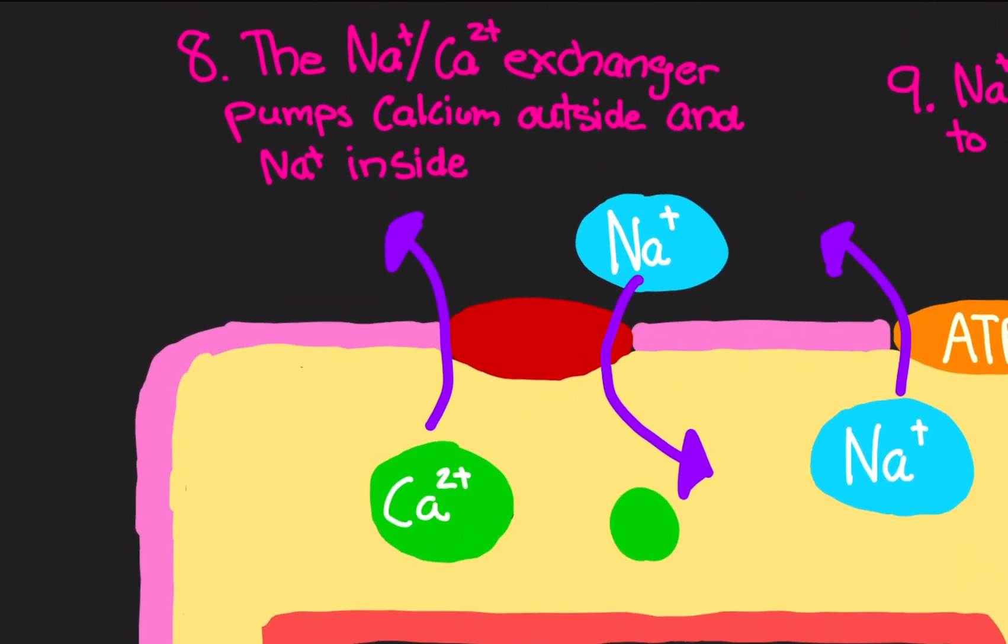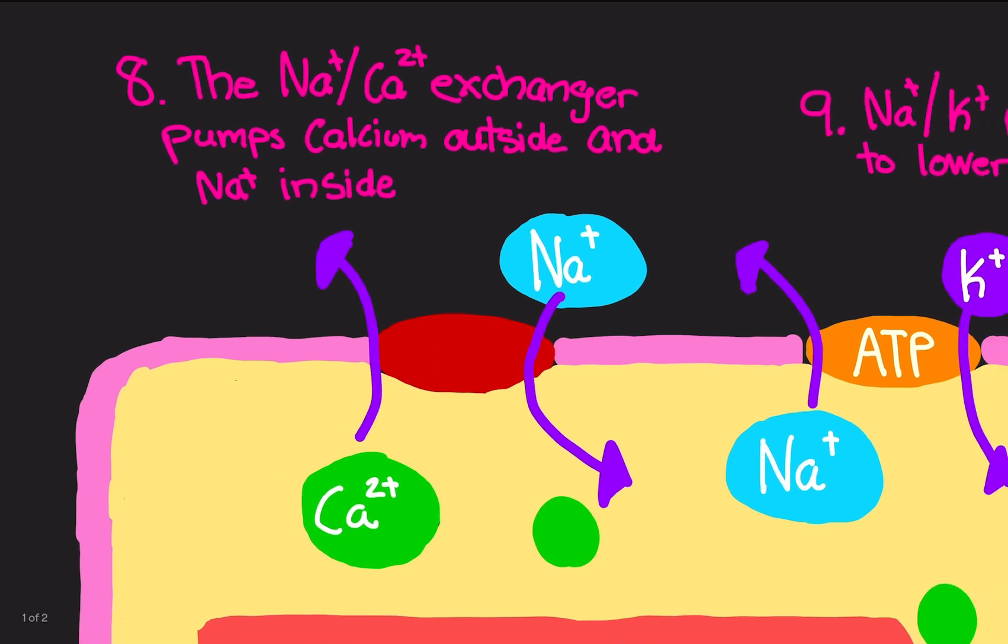There's something called the sodium calcium exchanger. It's a pump. Calcium does not want to go outside willingly. It does not want to do that. So what's going to happen is that sodium does want to come inside because of diffusion, of concentration gradient. There's not that much sodium inside the cell. There's a lot outside the cell. So sodium is like, hey I want to go inside. I'm going to give you my concentration energy to calcium so you can go outside.